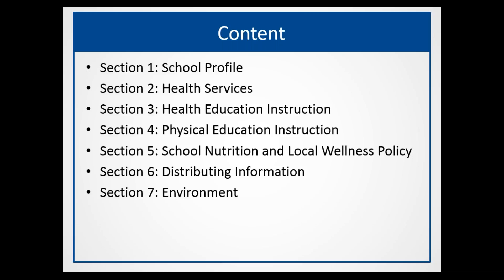The seven sections are listed here, and within the PDF profile — which is attached to this webinar — each section includes a recommended point of contact who would be a good person to collect that information. Those sections are: general information about the school, health services, health education, physical education, school nutrition, how you distribute information around all of those topics, and section seven is about environment.